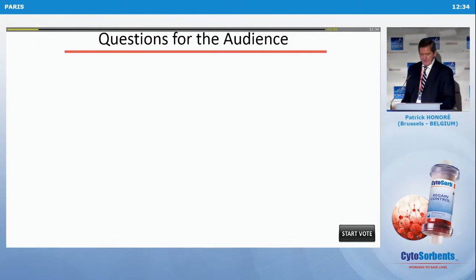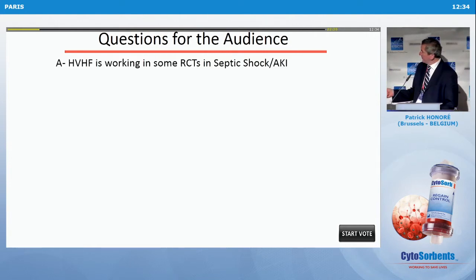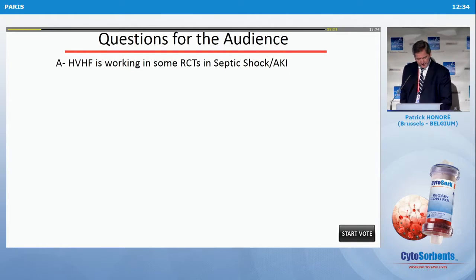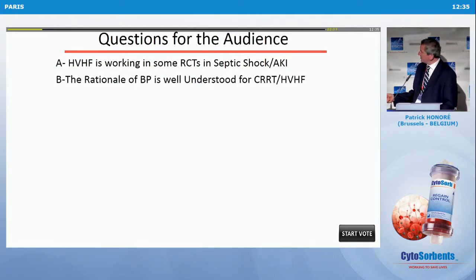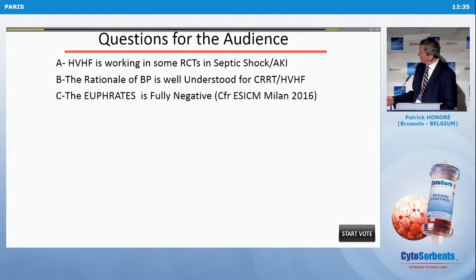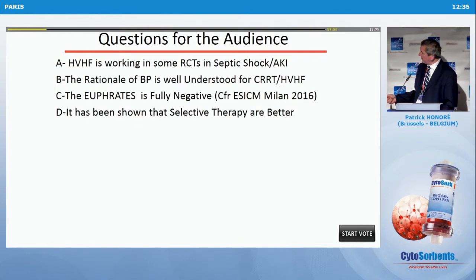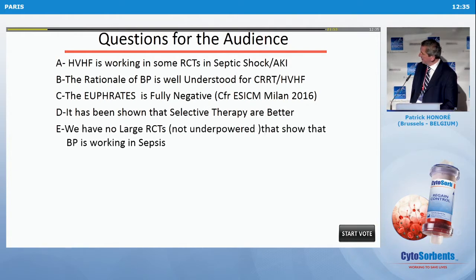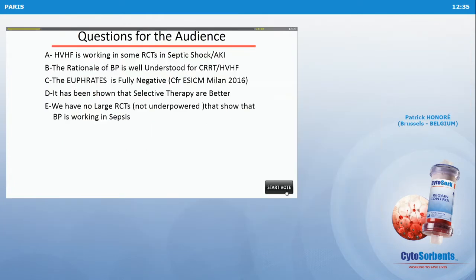I have one set of questions for you — please use your smartphone. First: high-volume hemofiltration is working in some RCTs in septic shock with AKI. Second: the rationale of blood purification is well understood for CRT or high-volume hemofiltration. Third: the Euphrates study is fully negative. Fourth: selective therapies are better than unselective. And last: we have no large RCT, not underpowered, that shows BP is working in sepsis. Let's start the vote — twenty seconds please.